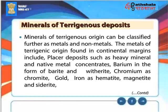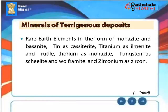Minerals of pterigenous origin can be classified further as metals and non-metals. The metals of pterigenous origin found in continental margins include placer deposits such as heavy mineral and native metal concentrates, barium in the form of barite and witherite, chromium as chromite, gold, iron as hematite, magnetite and siderite, rare earth elements in the form of monazite and bastnäsite, tin as cassiterite, titanium as ilmenite and rutile, thorium as monazite, tungsten as scheelite and wolframite, and zirconium as zircon.